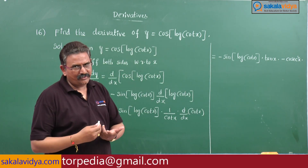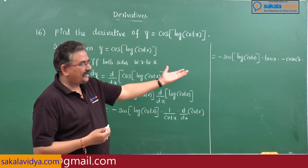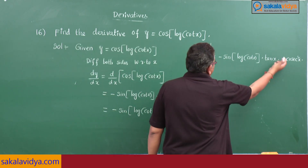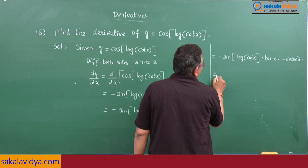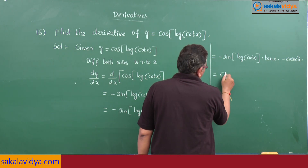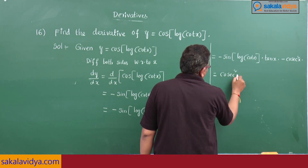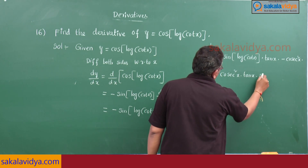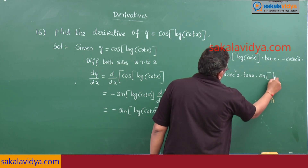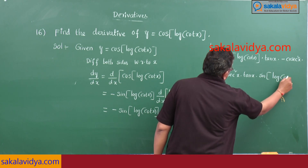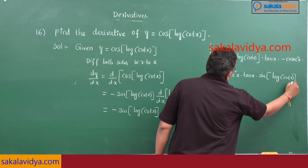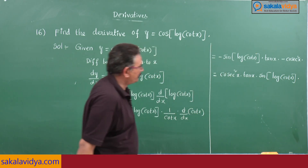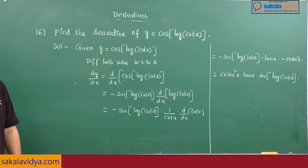If you wish you can simplify; otherwise you can leave the problem up to this step. The minus times minus gives plus, so this becomes: cosec²x into tan x into sin(log(cot x)). Once again, if you wish you can simplify this part further, otherwise you can leave it here.